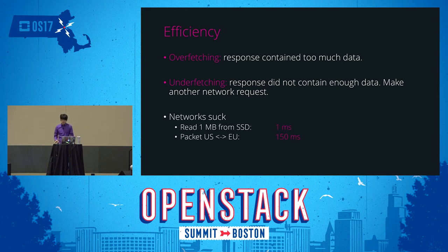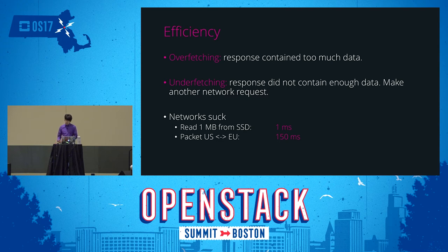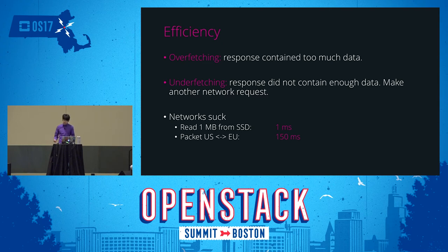These are huge problems because networks are slow. Reading 1MB of sequential data from a modern SSD is fast, but a packet round-trip from the US to Europe takes about 150 milliseconds — the network is exponentially slower than everything else in a typical application stack. With mobile devices, networks are even more unreliable, subject to interference from solar flares, other devices, buildings, vehicles, and terrain. In many parts of the world, wireless network quality caps out at sub-2G and data usage is heavily metered.